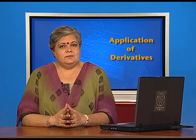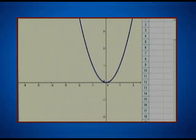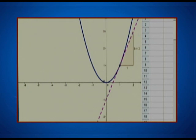Let us take a look at it through an applet. Here we have a graph of the quadratic function. Let us take a point A on this graph and construct a tangent at point A. Let us also measure the slope of this tangent. In this position the slope of the tangent is represented by the number B, which is taking the value 2. Let us also construct a point P which has the same x coordinate as point A and the slope B as the y coordinate.